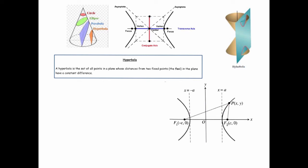We've looked at parabolas and ellipses; now we're going to look at hyperbolas. The geometric definition of a hyperbola is that it's the set of all points in the plane whose distances from two fixed points called the foci have a constant difference. This is the complete opposite of how we defined an ellipse — for an ellipse, the distances from the two fixed points had a constant sum.